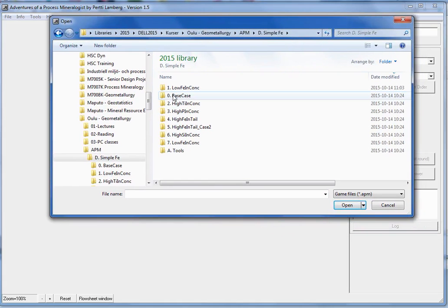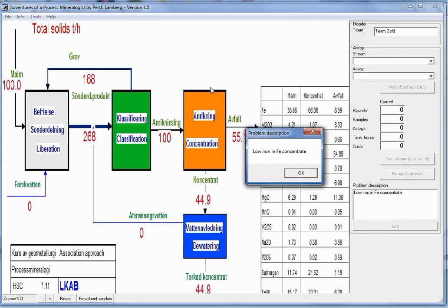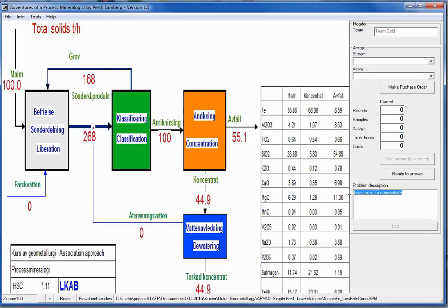And then I'm opening the case what is to be played. Different circuits are in different folders. So this is now simple iron process. And this base case gives information of the base case, so that you use as a reference. But now we play low iron in concentrate. And going inside that, there's a file which is an apm file. And opening that.